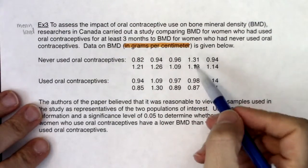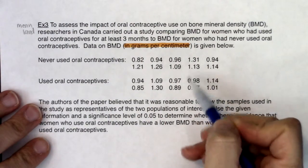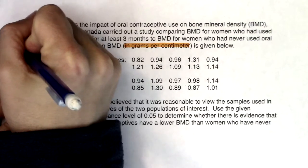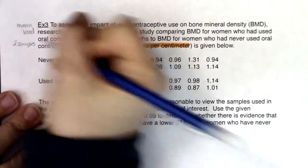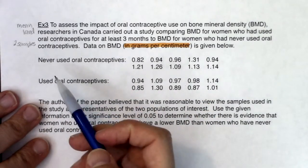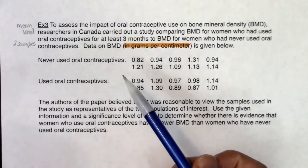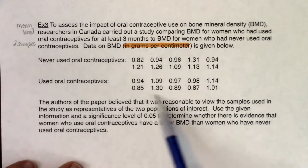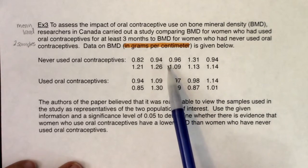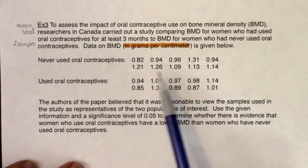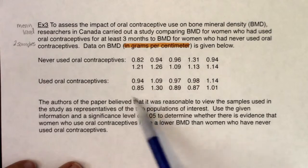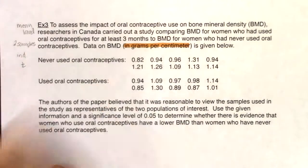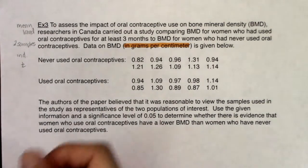You can see I have two samples — two different sets of women: women who had never used the pill and women who had used the pill. Now, once we say two samples, the next question has to be: are these independent or paired? Does the bone mineral density of one group have any effect on the bone mineral density of the other? The answer is no — the BMD for these women has nothing to do with the BMD for the other group. So these are independent samples, and I'm going to use a t-test.